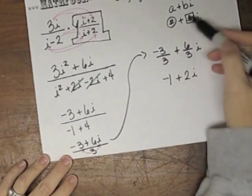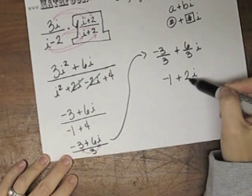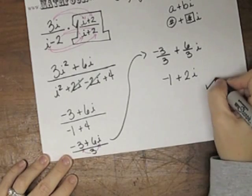So I have negative 1 plus 2i. Now look at that. It's in this little shape. We've got a number plus a number i. So we're all good.